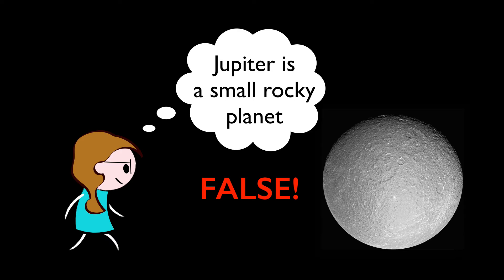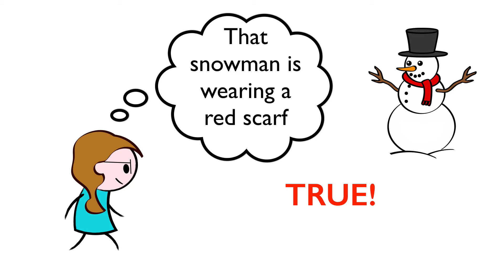What makes a belief false? The same thing that makes any empirical proposition about the world false: it's false because what it asserts doesn't correspond to the facts. Beliefs are the sorts of things that can be true or false — and notice that this is another feature propositions have. By definition, a proposition is the sort of thing that can be true or false. So a belief is a mental state that is about something; it has a certain content that can be expressed by a proposition which asserts that such-and-such is the case — for example, that the snowman is wearing a red scarf.